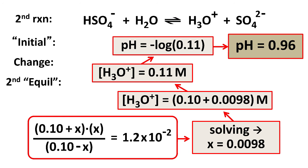a little bit lower than what we'd expect for a monoprotic strong acid of the same concentration. We get a little bit lower pH, a little bit more hydronium ion concentration from the second dissociation.